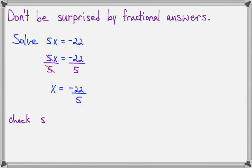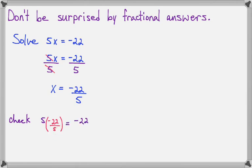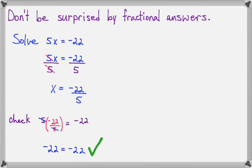If we check it, I'm going to put the answer I think is right in the place of x. So 5 times our answer equals negative 22, and when I put this in place here, I can see that the 5s are going to cancel, and we're going to have negative 22 equals negative 22. So that's correct.